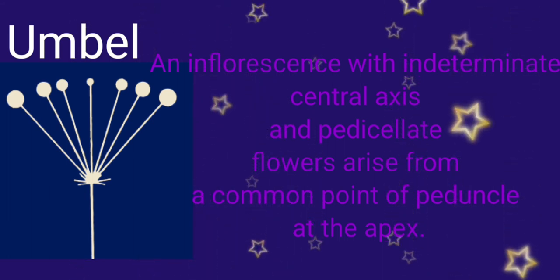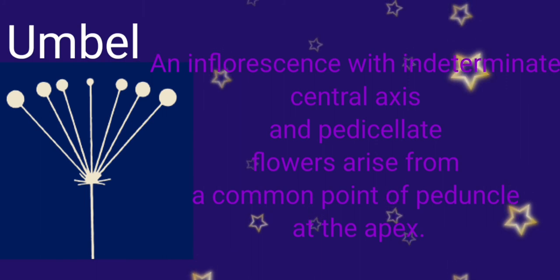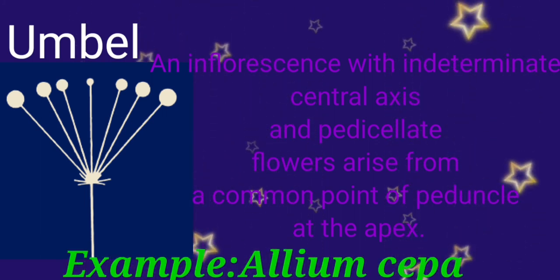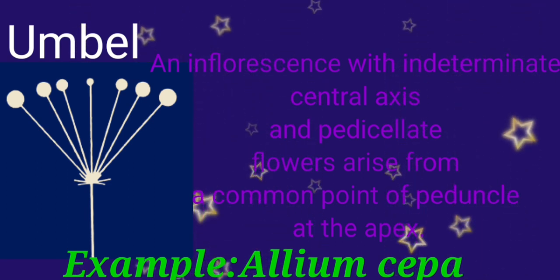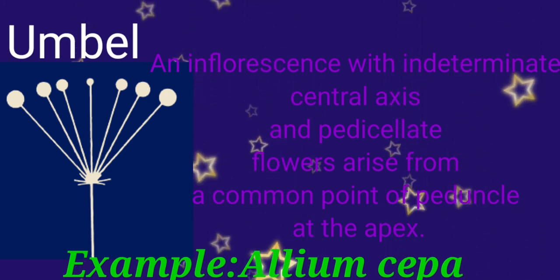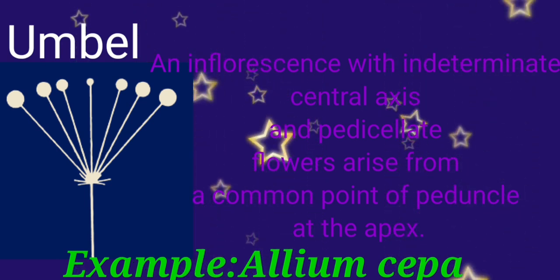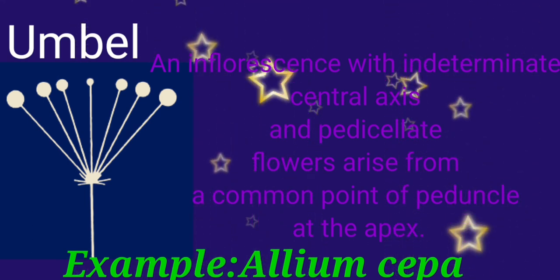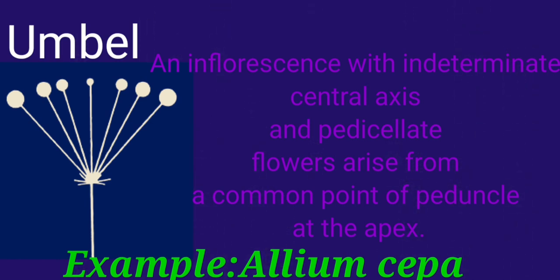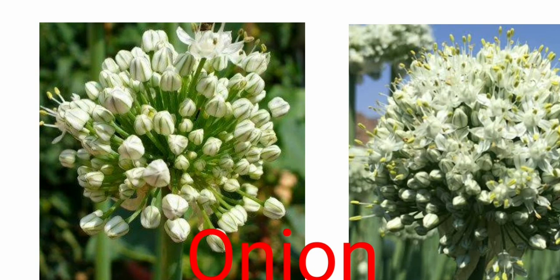Next one is the umbel. Here the umbel is an inflorescence which has an indeterminate central axis and pedicellated flowers which arise from a common point of the peduncle at the apex region. The pedicel, that is the stalk of the flower, arises from a common point of the peduncle. The example is Allium cepa, and this is the picture of Allium cepa, that is onion. In these two pictures you could find the pedicel which originates at a common point of the peduncle, that is the central axis.